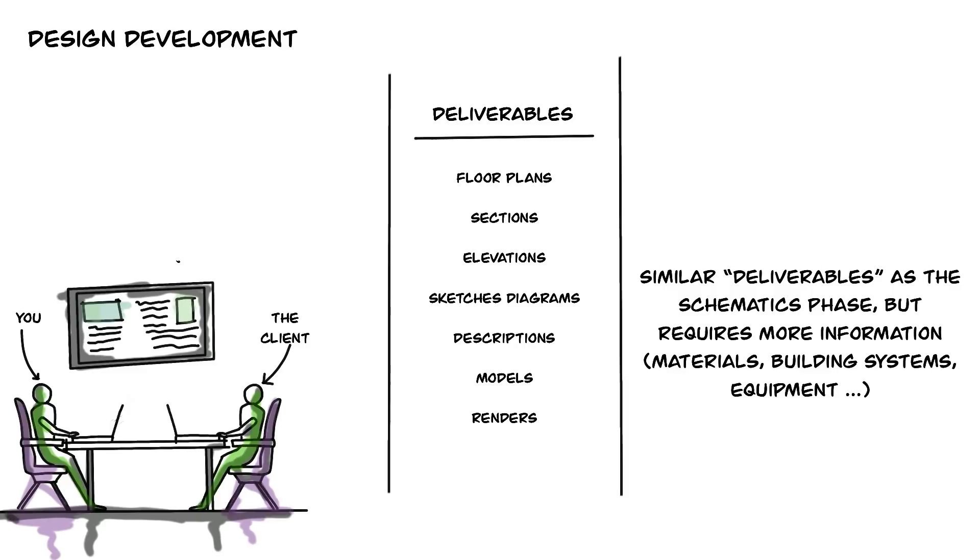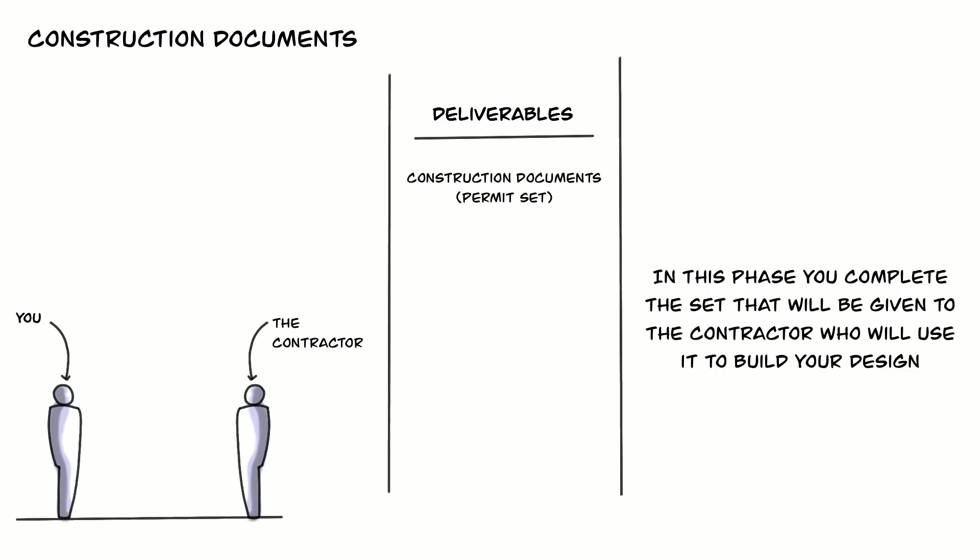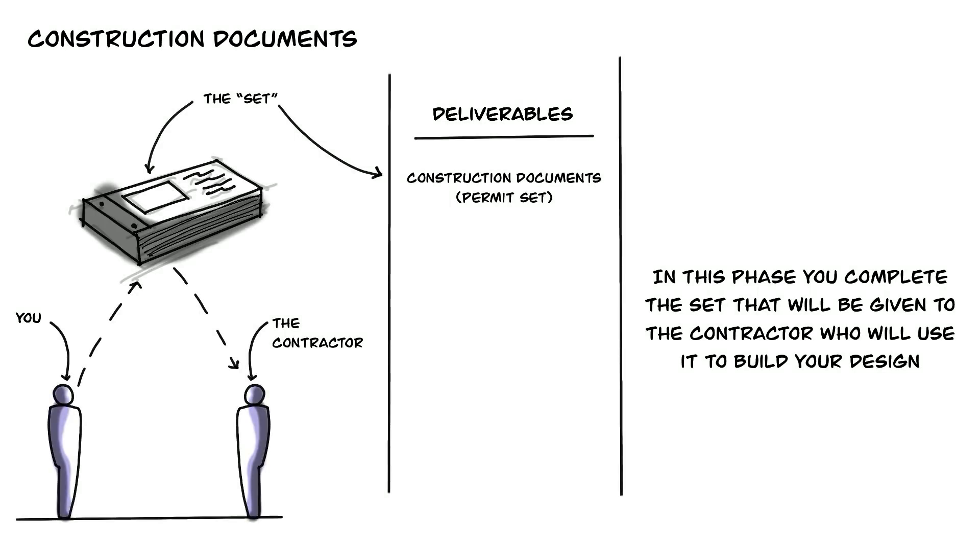This phase doesn't necessarily mean that you're done designing, but instead it's a phase where you will tie most of the loose ends that you didn't during the first two phases. Here you are creating a set of plans and documents that will serve as a manual to be used to build the design. This set will ultimately be given to a contractor, who will use a team to put together the building that you and your team have created.